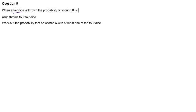With a fair dice, we know the probability of scoring any one of those numbers is one in six. So we get four fair dice thrown, we've got to work out the probability of scoring a six with at least one of the four dice.